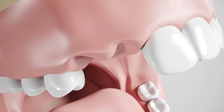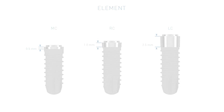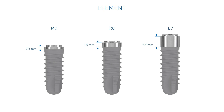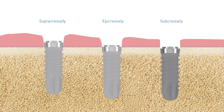The evaluation of soft tissue characteristics and planning of the implant insertion depth is a crucial part of preoperative planning. The three available collar heights of the Tomin Medical Implant System cover a broad range of clinical situations and can be selected based on the available soft tissue and aesthetic needs. Dependent on the individual patient characteristics, it might be indicated to place the implant either supracrestally, epicrestally, or subcrestally.